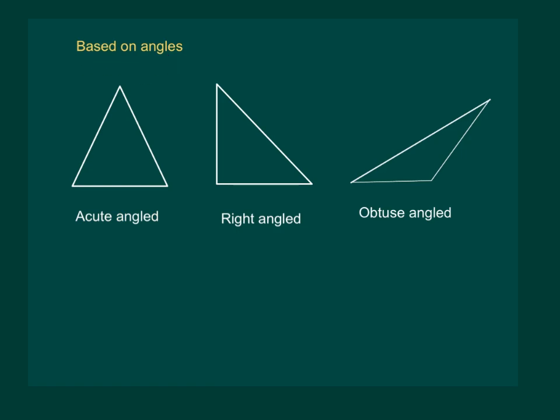Based on angles, triangles can be defined as acute-angled triangle, right-angled and obtuse-angled triangle. In an acute-angled triangle, all the angles are less than 90 degrees means angle A, angle B and angle C all should be less than 90 degrees.